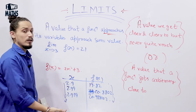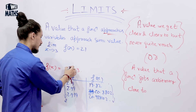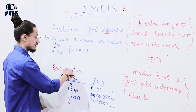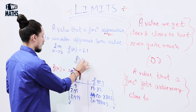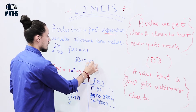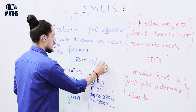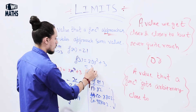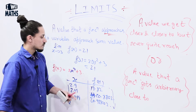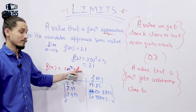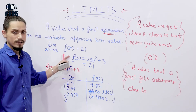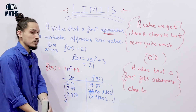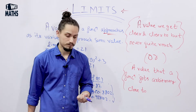But if we can put the value of 3 directly, we'll get the same result in this case. So f(3) = 2 × 3² + 3 = 18 + 3 = 21. So if I can get the value directly, why would I use limits? Because all functions are not the same and all situations are not the same.